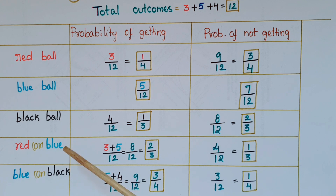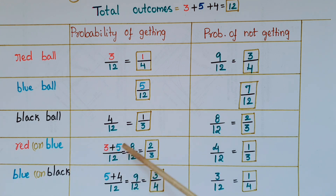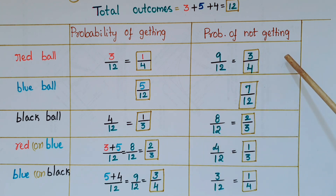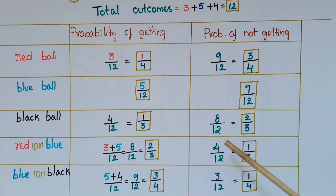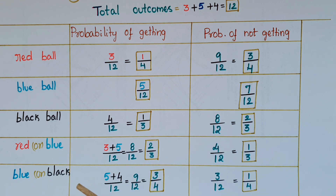Probability of getting a red ball or blue ball: three red balls plus five blue balls gives eight by 12, equal to two by three. Probability of not getting a red or blue ball: the remaining are only four black balls, so four by 12, that is one by three.